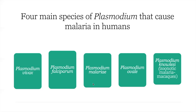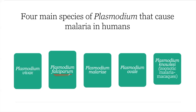There are four main species of Plasmodium that can cause malaria in humans: Plasmodium vivax, Plasmodium falciparum, Plasmodium malariae, and Plasmodium ovale. There is also Plasmodium knowlesi, which is zoonotic and seen in monkeys, particularly the macaques — it does not affect humans. Which of these four is the most common worldwide? It is Plasmodium falciparum.